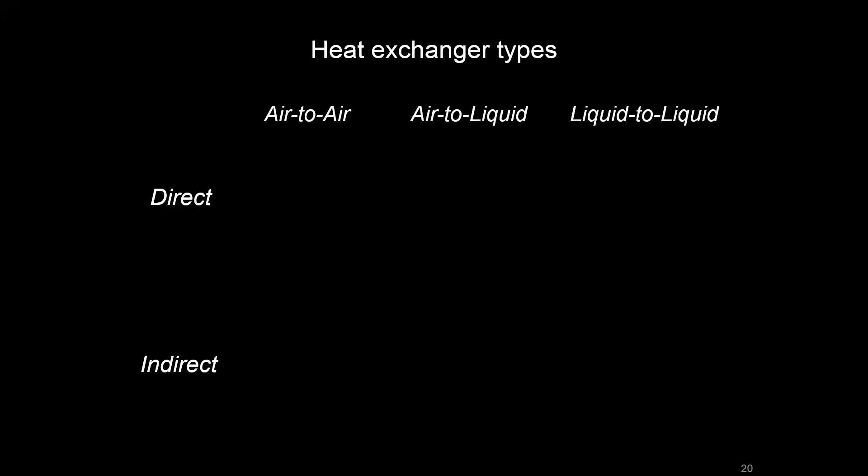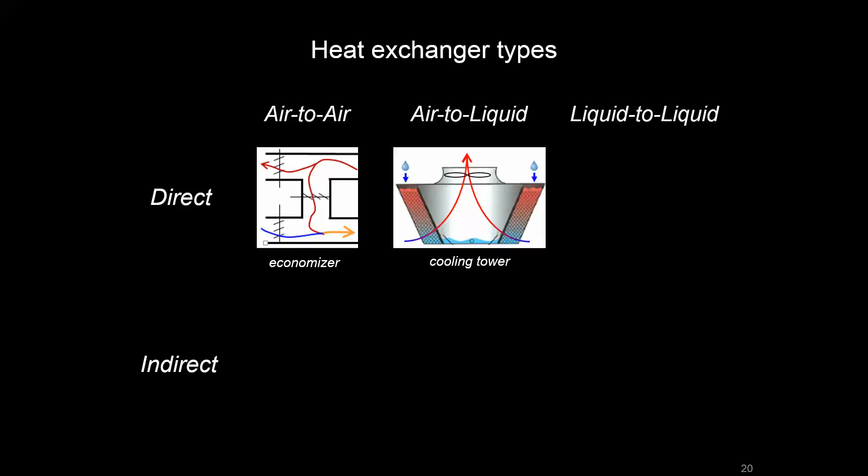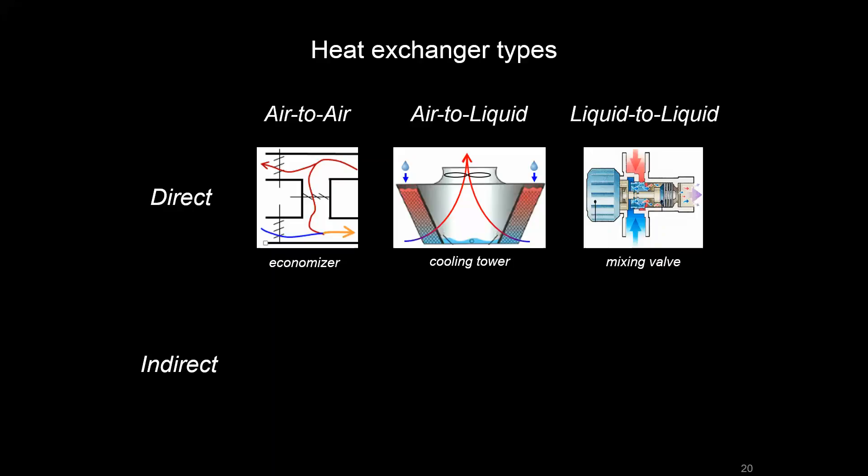And just to introduce a few more flavors, we can have different types of media associated with that heat exchange. So in an air-to-air direct heat exchange, that could be something like an economizer where you're mixing return air with outside air and providing a mixed air going to a coil or going to your space. In a direct air-to-liquid heat exchange, that could be something like a cooling tower, where water is being dropped in some fill material and air is being either blown across it or drawn up through it to then get evaporated into the air. Something like a mixing valve is an easy to understand example of a direct liquid-to-liquid heat exchanger.